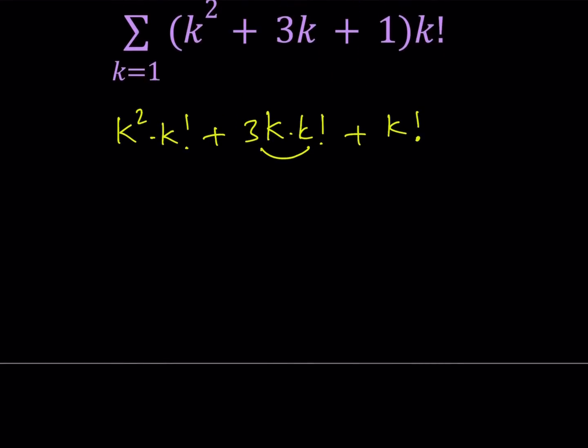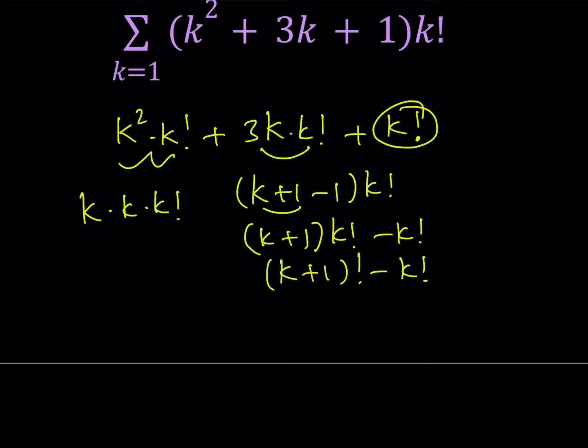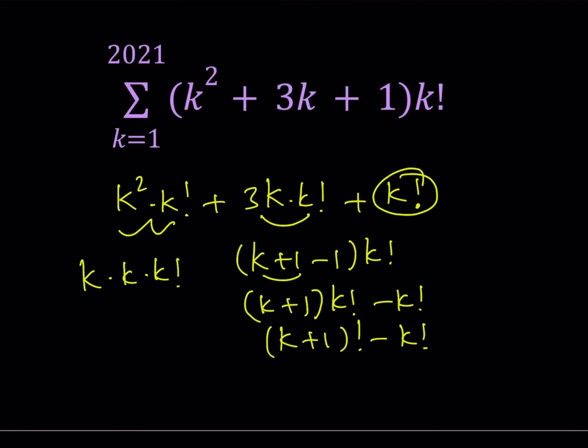You can write this as k plus 1 minus 1 times k factorial, and then that becomes k plus 1 times k factorial minus k factorial, which is k plus 1 factorial minus k factorial. Therefore, you get a telescoping sum from here. But what about this one? That's k squared. Could I possibly write it as k times k times k factorial? But this is not going to become k plus 1. Another thing we have to worry about is the sum of the factorial, which is not fairly easy to do. So we've got to use a different approach, I think.